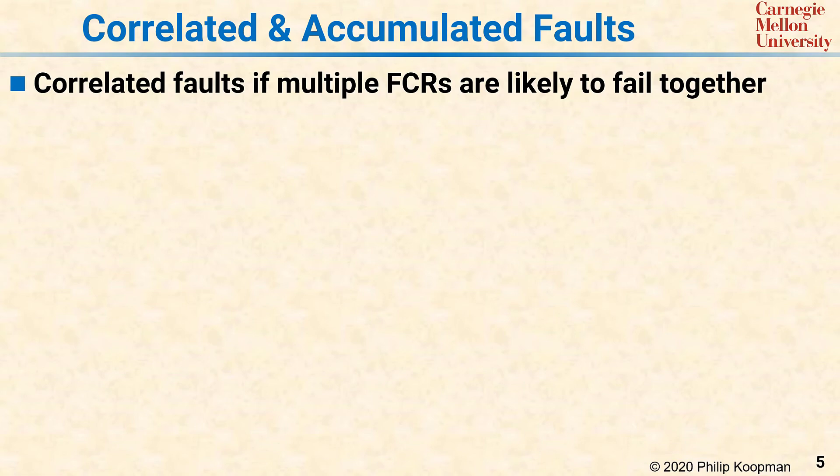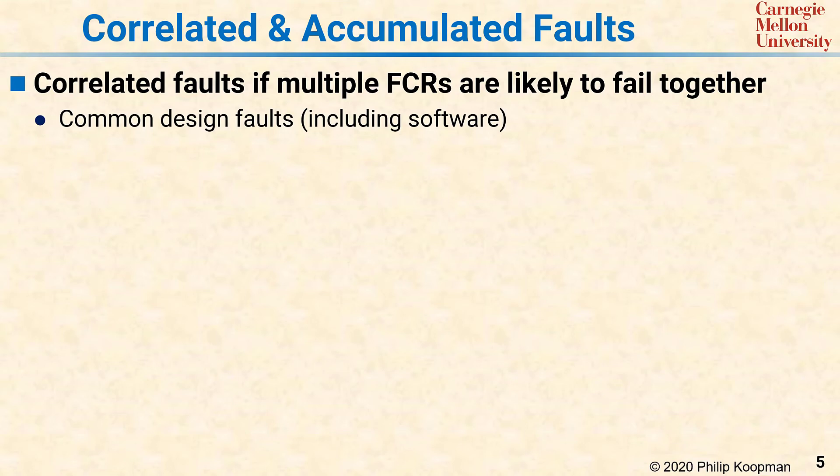Concepts closely related to single points of failure are correlated and accumulated faults. Correlated faults happen if there are multiple fault containment regions that have some reason that makes them likely to fail together. Some of these reasons include common design faults, such as the same defective software running in multiple fault containment regions — when that software defect hits, all the FCRs will fail together.